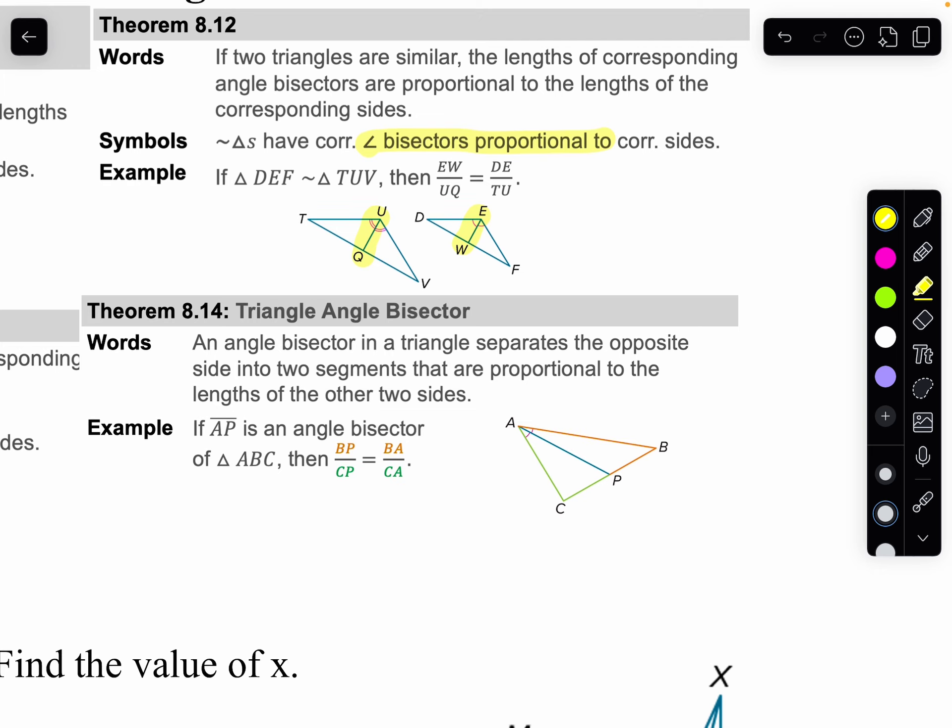And then the last one is kind of an interesting one. If I have an angle bisector in a triangle, it's going to split that opposite side into a proportional as the length of the other two sides. So, if we take a look here at the theorem, we list it out. BP is to CP as BA is to CA. Looking at it in color, you can see orange goes to orange as green goes to green.